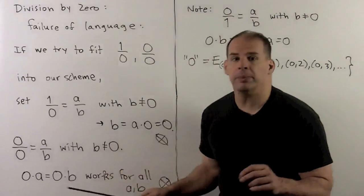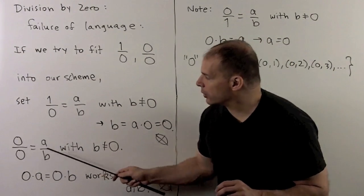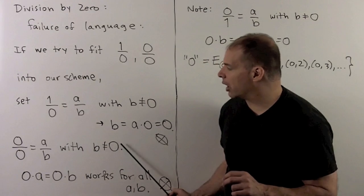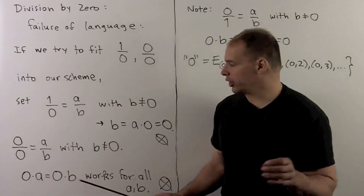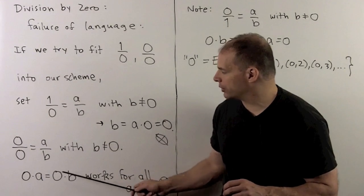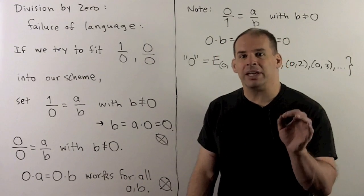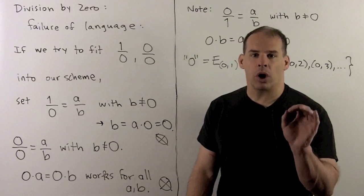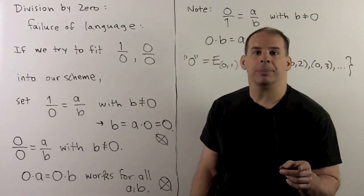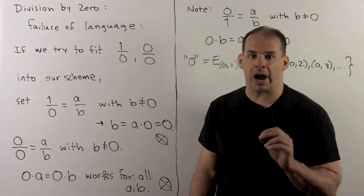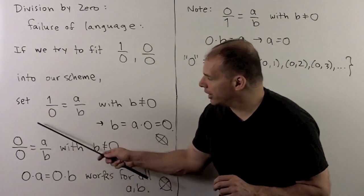For 0 over 0, the situation is a little bit different. So, I'll have 0 over 0 equals A over B, B not 0. Again, this translates into an equation. 0 times A equals 0 times B, or 0 is equal to 0. So, that means any A and B work from the previous board. So, if 0 over 0 is a rational number, it would have to be equal to every rational number. This is the case that we call indeterminate.